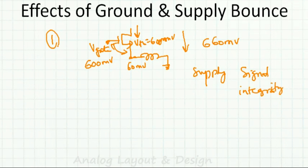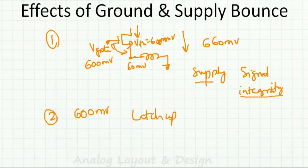These are known as power supply integrity or signal integrity issues. A second effect is that if the ground bounce is very high — say more than 600 mV — it can trigger CMOS latch-up. Latch-up is covered in a separate video, but one of the triggers for latch-up is a high supply bounce or ground bounce.